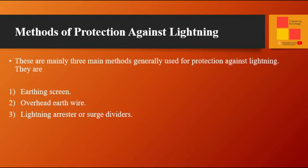There are three main methods generally used for protection against lightning. They are: earthing screen, overhead earth wire, and lightning arrestor or surge dividers.